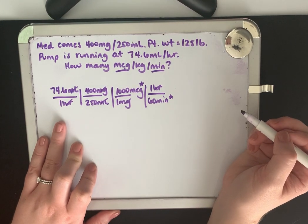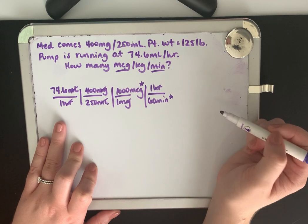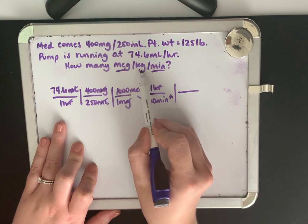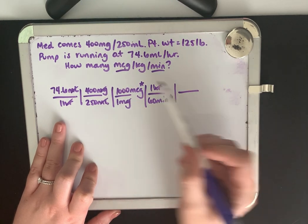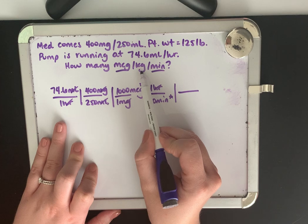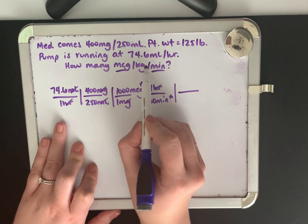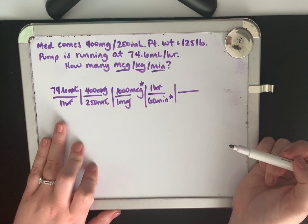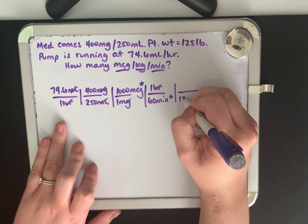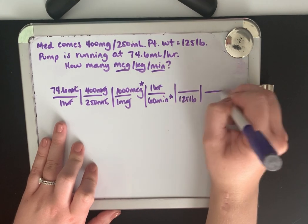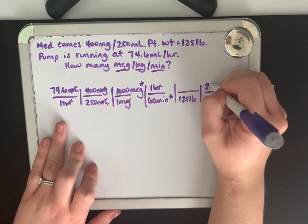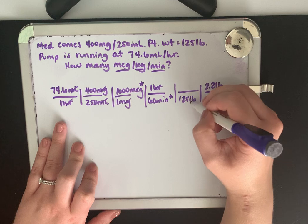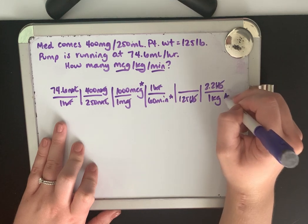So the last thing we have to do is solve for kilograms. Now when we do these problems, this is mcg per kilo per minute. Now this is however many mcg per every kilo per every minute. So we have to divide by our kilos. So we've got to make sure our kilos are on the bottom. So if our patient weighs 125 pounds and there's 2.2 pounds for every one kilo, our pounds cancel out and we're left for kilo.